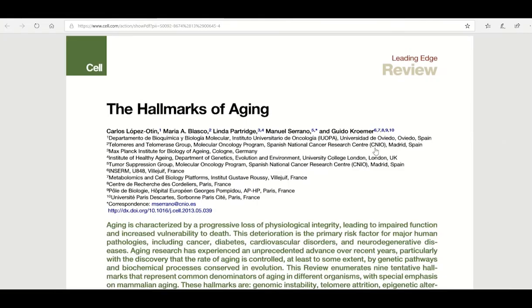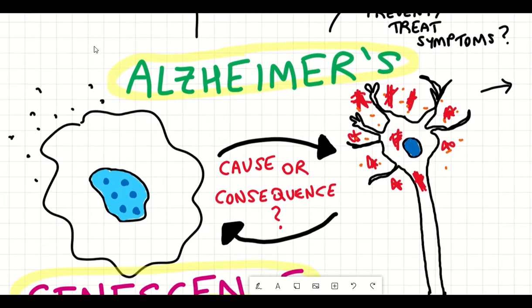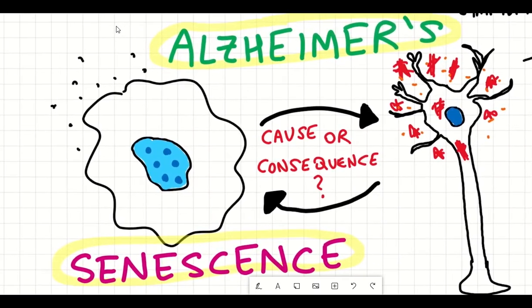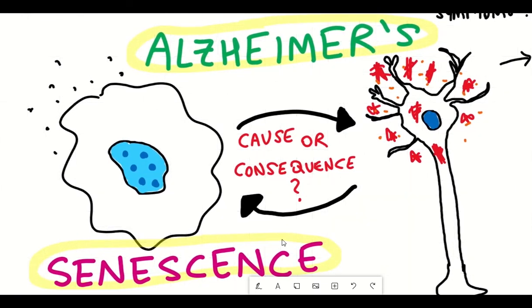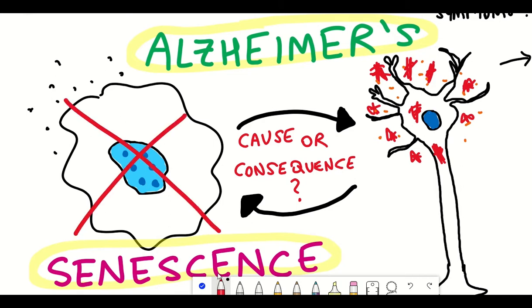Interestingly in human patients there is also an increase in the presence of senescent cells within the brain during aging. Moreover there have been some recent studies done in mice models of Alzheimer's disease whereby the removal of senescent cells helps to reduce the Alzheimer's disease related phenotype.